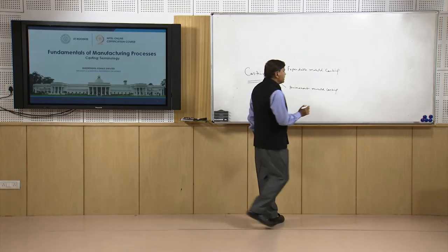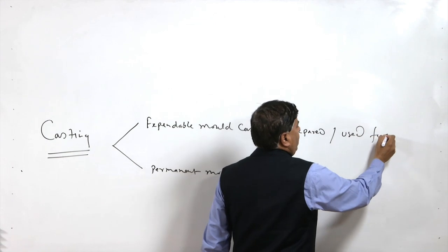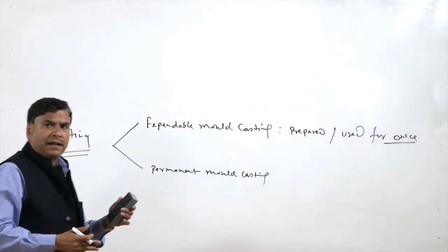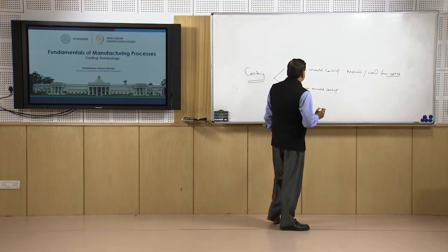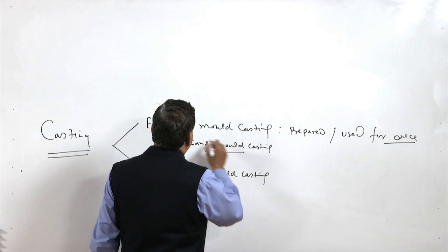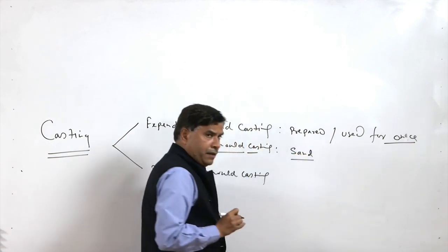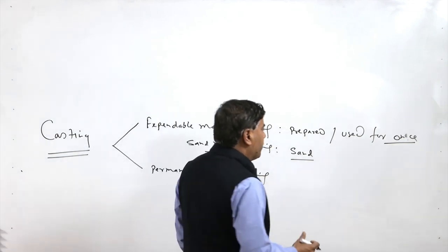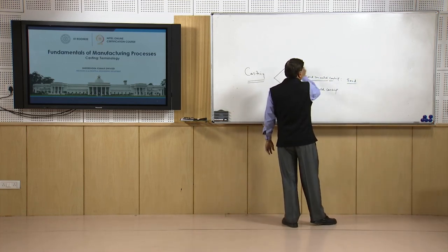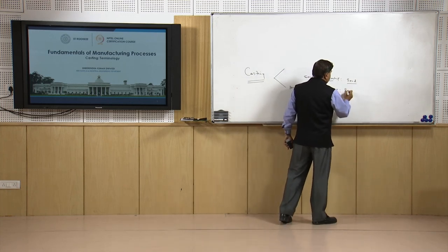In the case of expendable mould casting, these moulds are prepared and used once only — one casting is made, then the mould needs to be destroyed, and another mould is prepared for making the next casting. Sand mould casting is one expendable mould method wherein sand is used for making the mould, and the mould is broken after the casting solidifies. In permanent mould casting, the moulds can be used repeatedly.